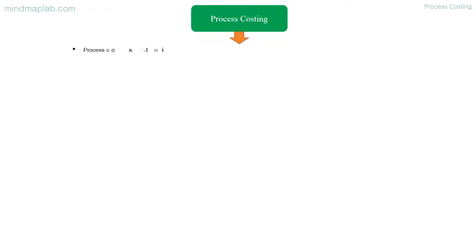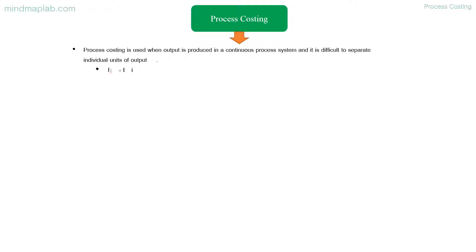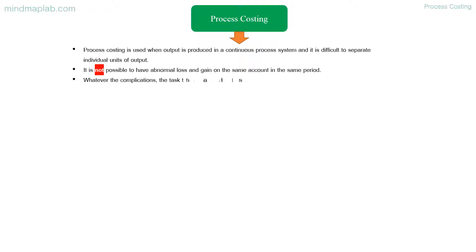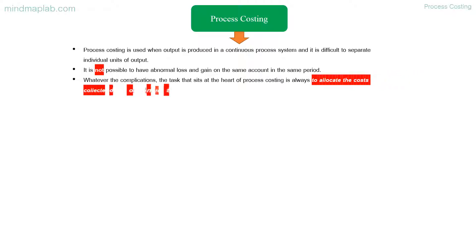Hello there. Today let's mind map process costing. Process costing is used when output is produced in a continuous process system and it is difficult to separate individual units of output. It is not possible to have abnormal loss and gain on the same account in the same period. The core task of process costing is always to allocate the costs collected on the debit side of the account to possible output on the credit side.